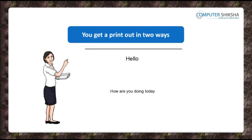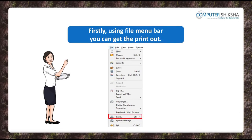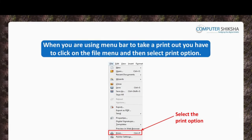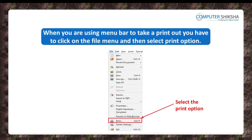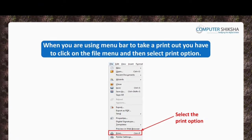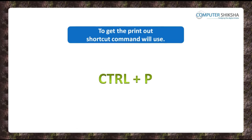In how many ways can you print out a slide? You can get a printout of a slide in two ways. Firstly, by using the option of the Menu Bar, and secondly, by using the shortcut command. When you want to take a printout using the Menu Bar, after clicking on the File Menu Bar, you need to select the option for Print, select the Printer, and get your printout. To get a printout, you will use the Ctrl+P shortcut command.